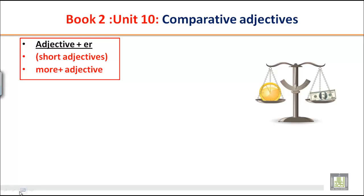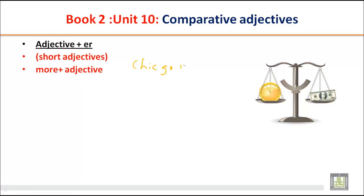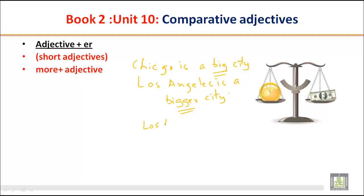For example, if we say Chicago is a big city, and Los Angeles is a bigger city — Chicago is a big city, but Los Angeles is a bigger city — so we can say Los Angeles is bigger than Chicago.